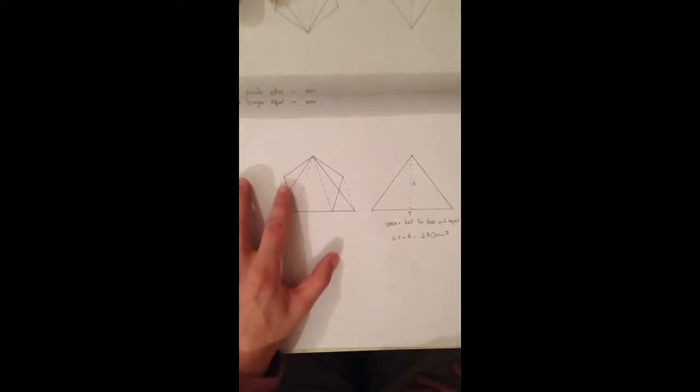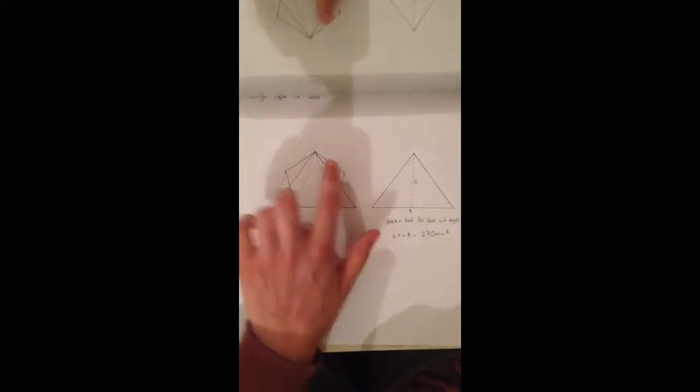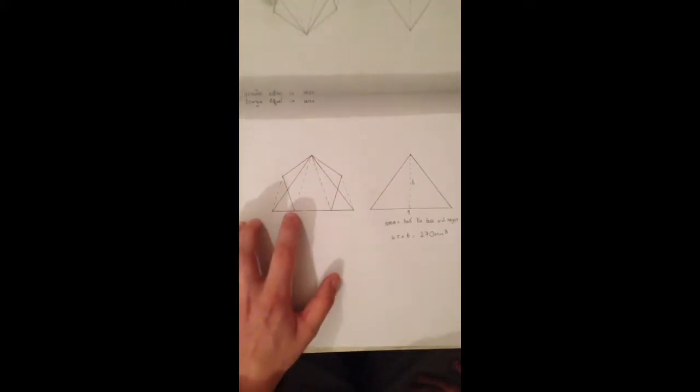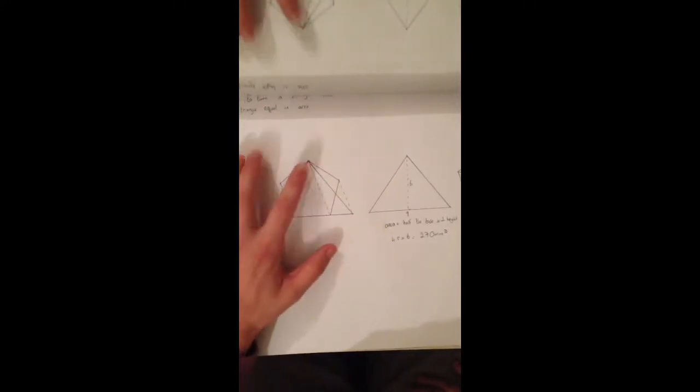So to start off we have our pentagon and what we do first is connect these two corner points on the pentagon as shown.